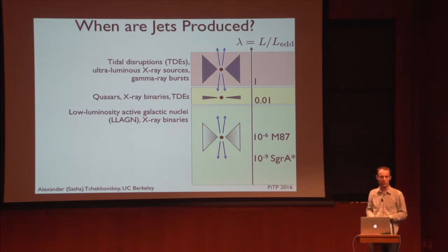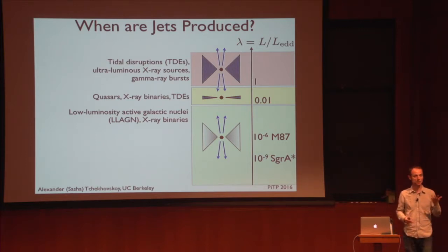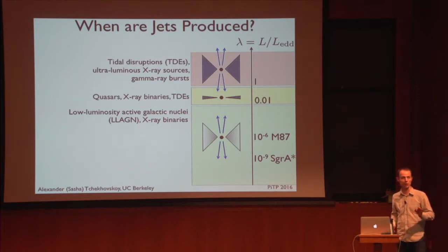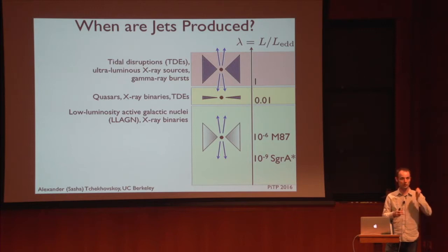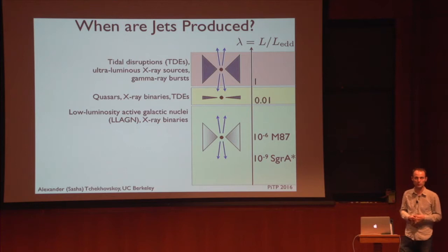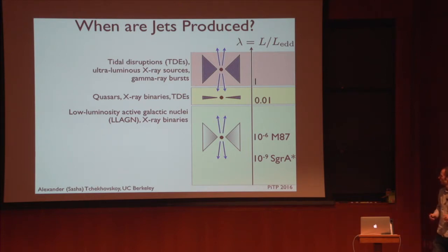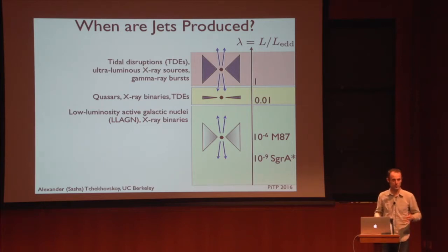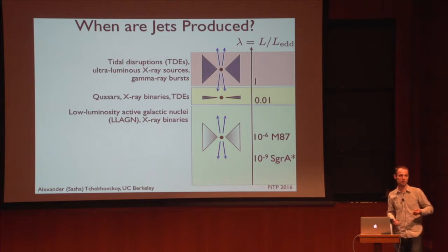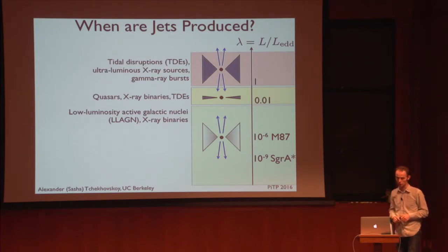If we decrease the mass accretion rate below about 1% of Eddington, the accretion flow becomes so dilute that it cannot cool. All radiation is locked up in the flow as heat — it's never radiated — and we again end up with a geometrically thick disk. But this one is optically thin, as opposed to the super-Eddington case. So even though the physics of these two accretion disks is very different, both are non-radiative. The fraction of radiation that escapes to an observer is tiny, making these actually the easiest to simulate.